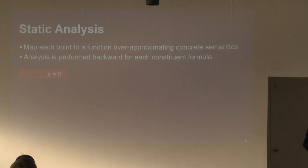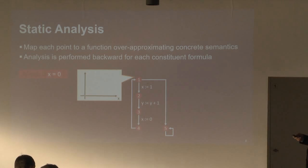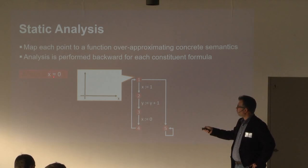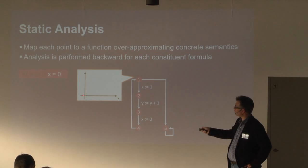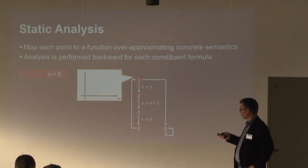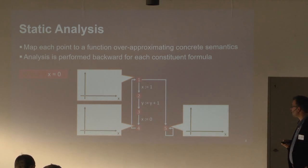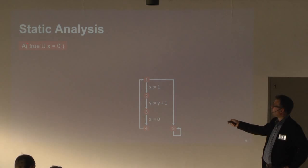Let's look first at the atomic proposition x equals zero and go back to our program. For an atomic proposition, it's very easy to define the abstract function. If x is zero, the function is defined and the value is zero; for all other values of x it's undefined. For an atomic proposition, this is the same no matter which program point we are at. The interesting part is when we go to the larger until formula.